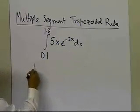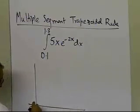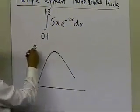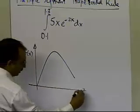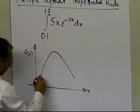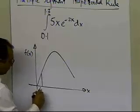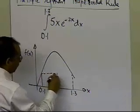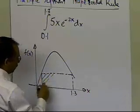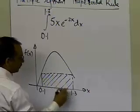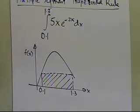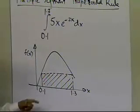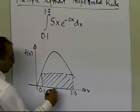If we're going to use the one segment trapezoidal rule, I'm going to show you graphically what it will look like. So 5x e to the power minus 2x is going to look like that as a function of x. If this number is 0.1 and this number is 1.3, then the single segment trapezoidal rule gives you this much area. This creates a lot of true error — the part which is not shaded — so what we can do is break this up into two segments.